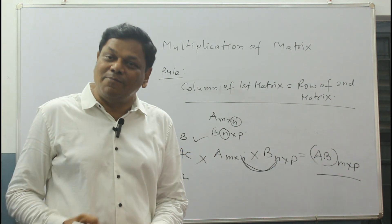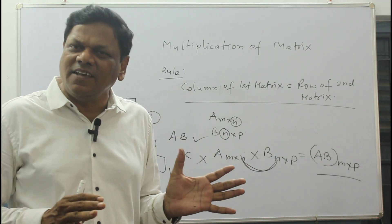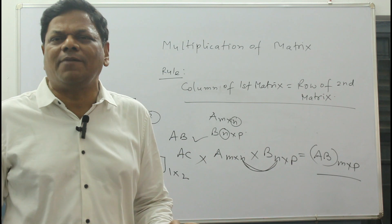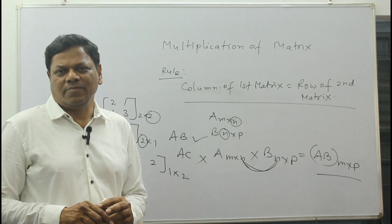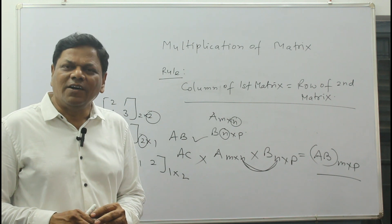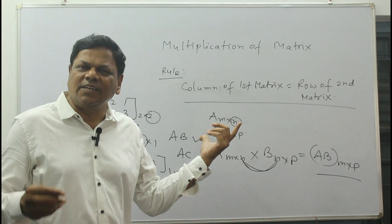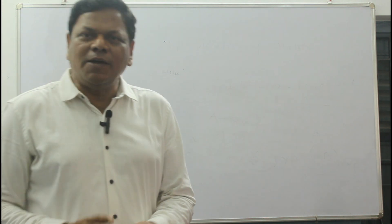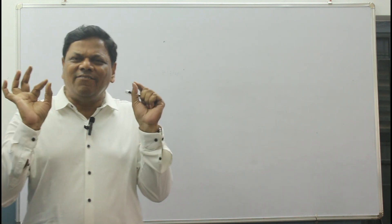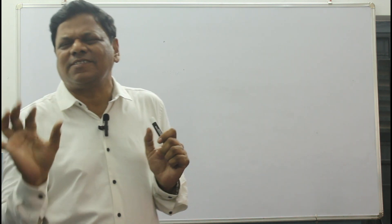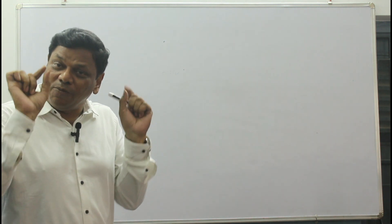So AB is possible but AC is not possible. This is how you have to understand multiplication. While doing multiplication, always you will check these things so that your mind is clear and there will not be any mistakes during exam. Then we will come to one more sum. The concept of multiplication is now explained.